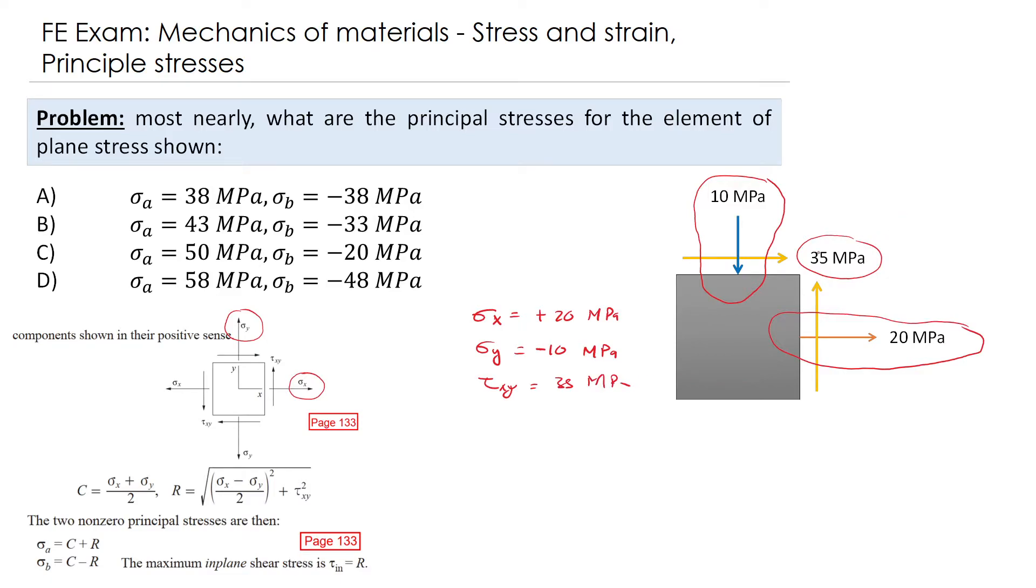For the shear, it is not that important for the sign convention because you will square it in the equation. The two non-zero principal stresses are C plus R and C minus R. C is the center of Mohr's circle, and R is the radius. R, by the way, is the maximum in-plane shear stresses. If the question was related to the maximum in-plane shear stresses, you only evaluate R.